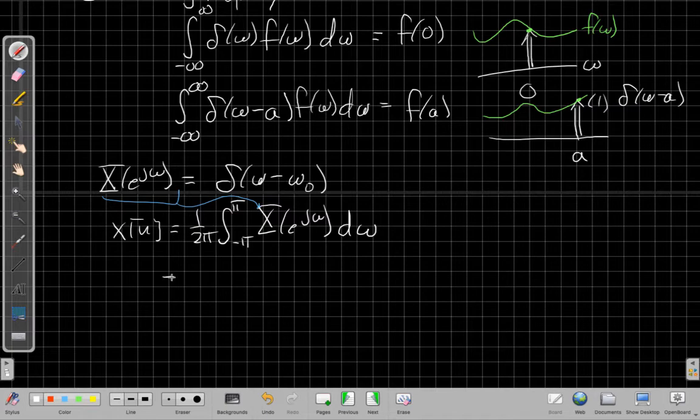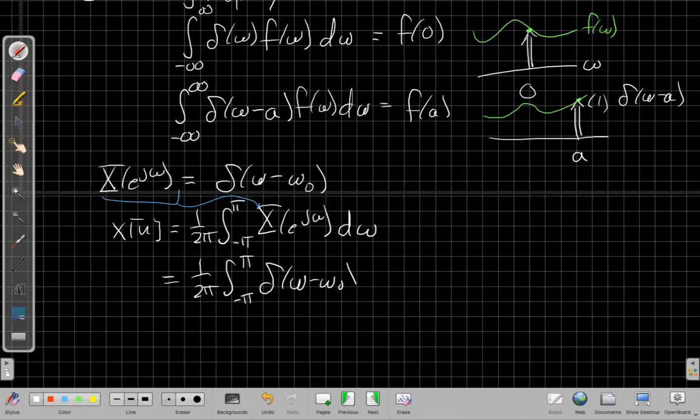And I now plug this in for my x. What I'll get is that x of n is 1 over 2 pi, the integral from minus pi to pi, of delta of omega minus omega naught. I forgot a really important thing here, this is e to the j omega n, I'm sorry. So yes, the definition of the inverse Fourier transform should have this e to the j omega n in here, it's 1 over 2 pi, the integral from minus pi to pi, of x of e to the j omega, e to the j omega n d omega.